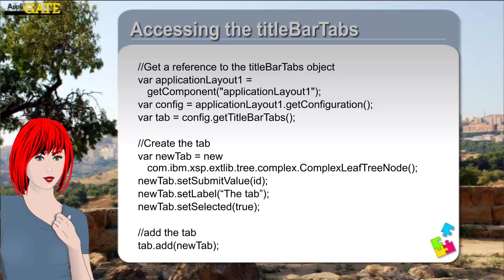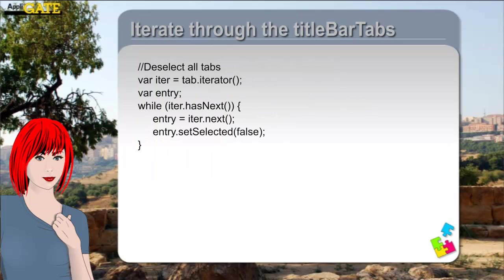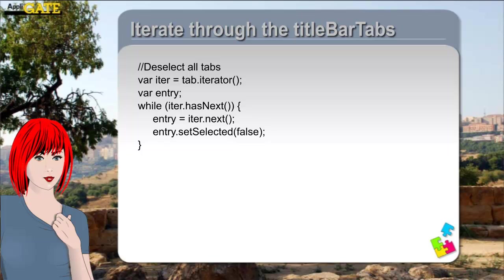Here you see the code to deselect all tabs. To deselect a tab we make use of the set selected method with false as argument. In general, to discover the method of a property, you use the name of the property as mentioned in the All Properties view and use 'get' or 'set' as a prefix. The code can also be found under the resources section of the course.